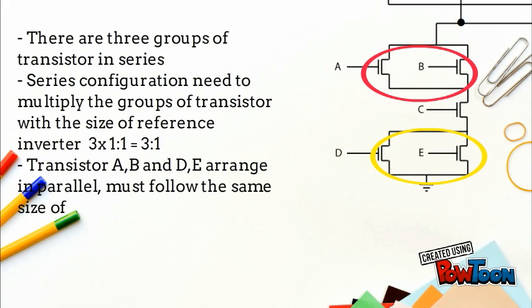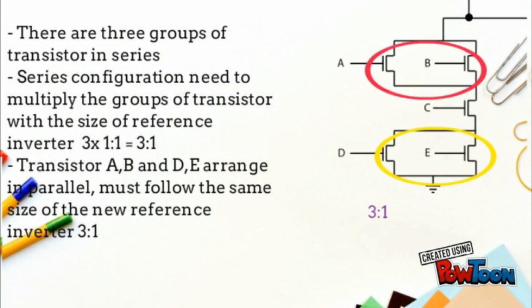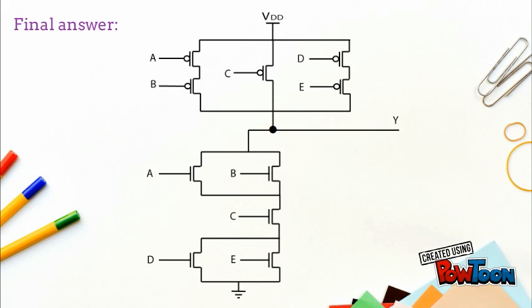Transistors A, B and D, E are arranged in parallel, and must follow the same size as the new reference inverter — 3-to-1. Final answer.